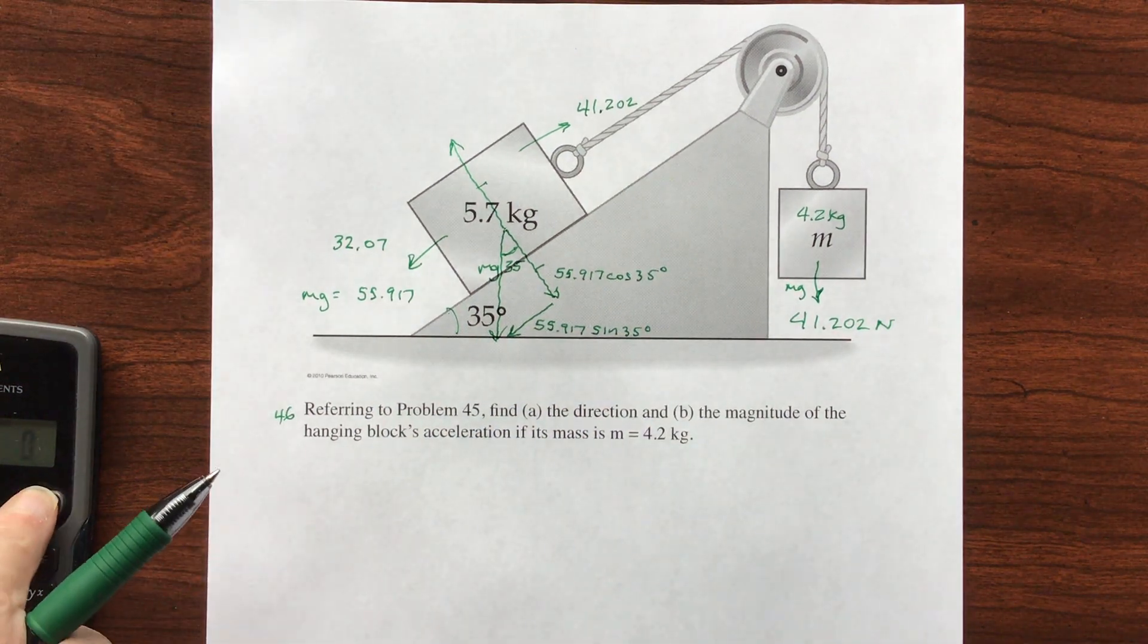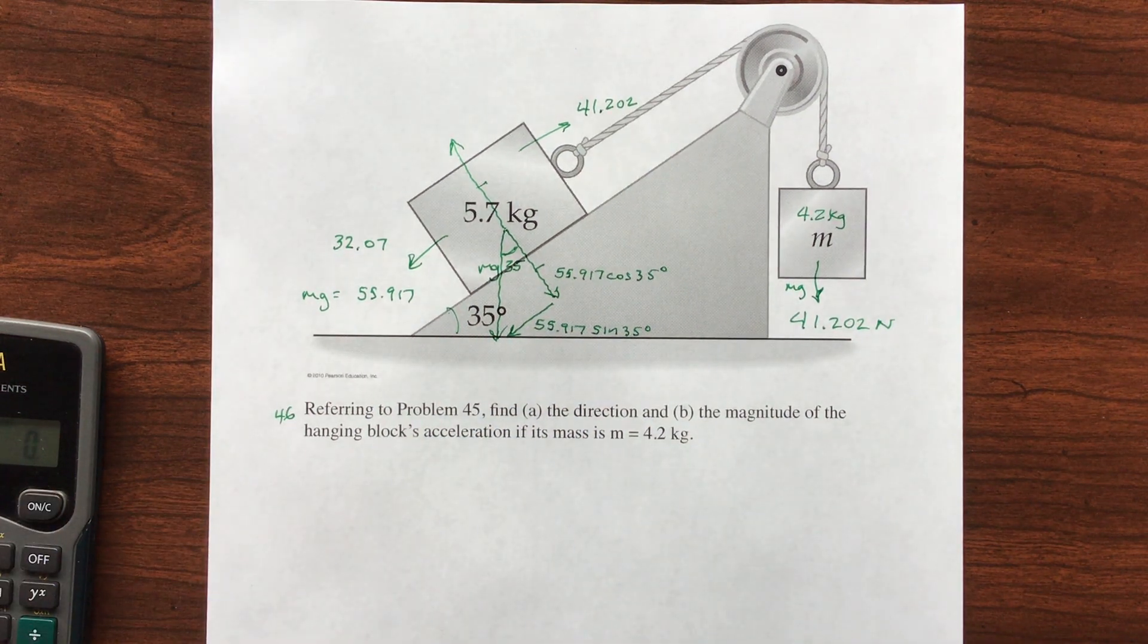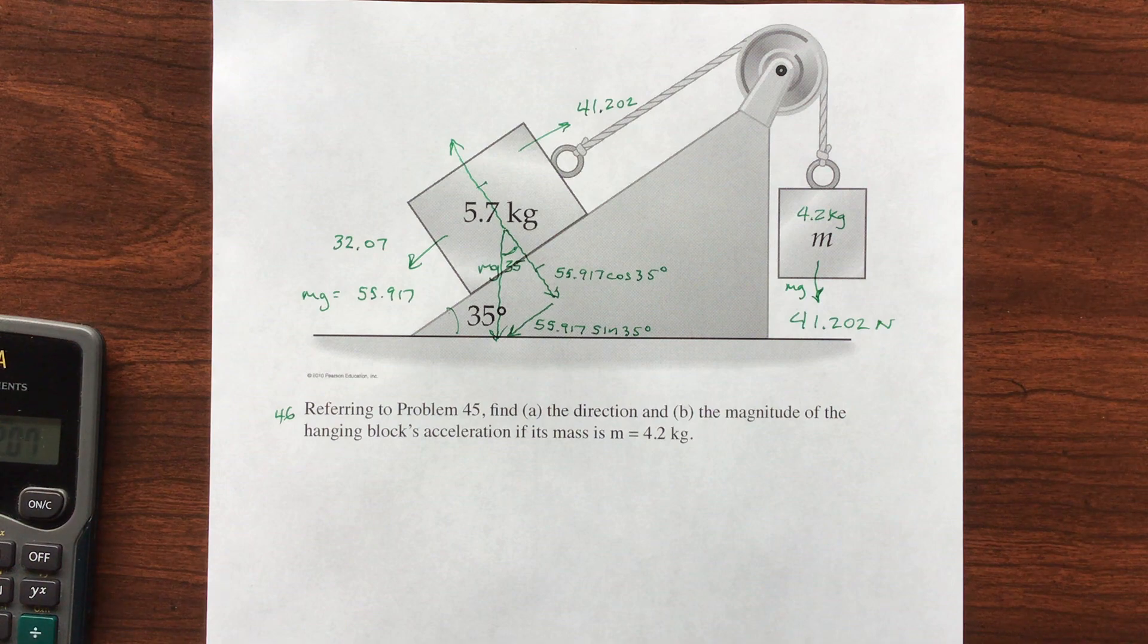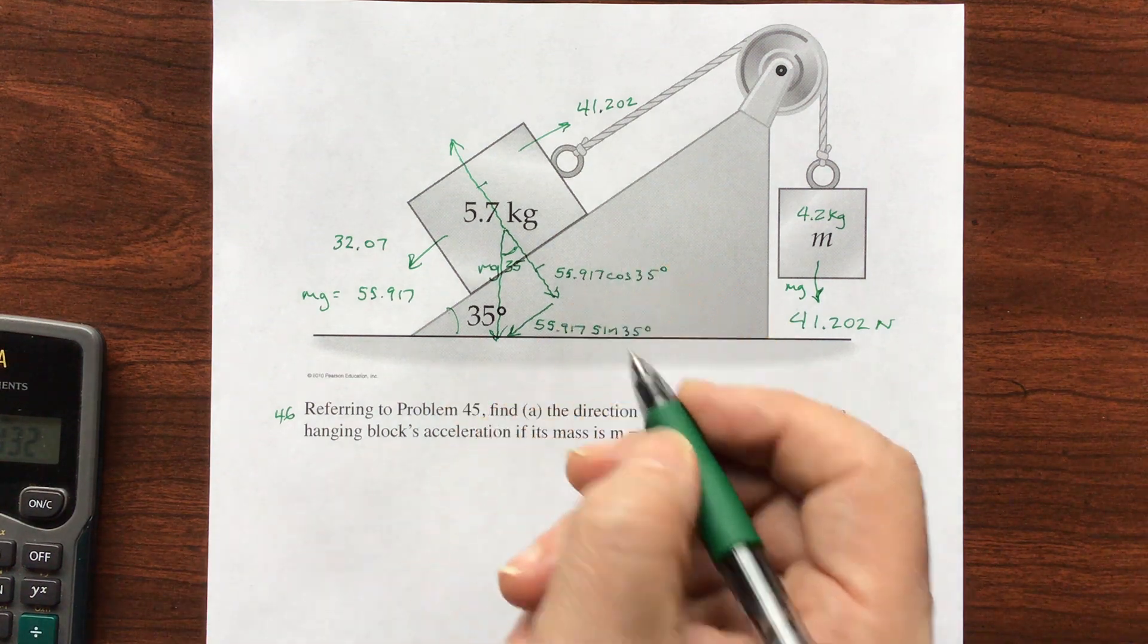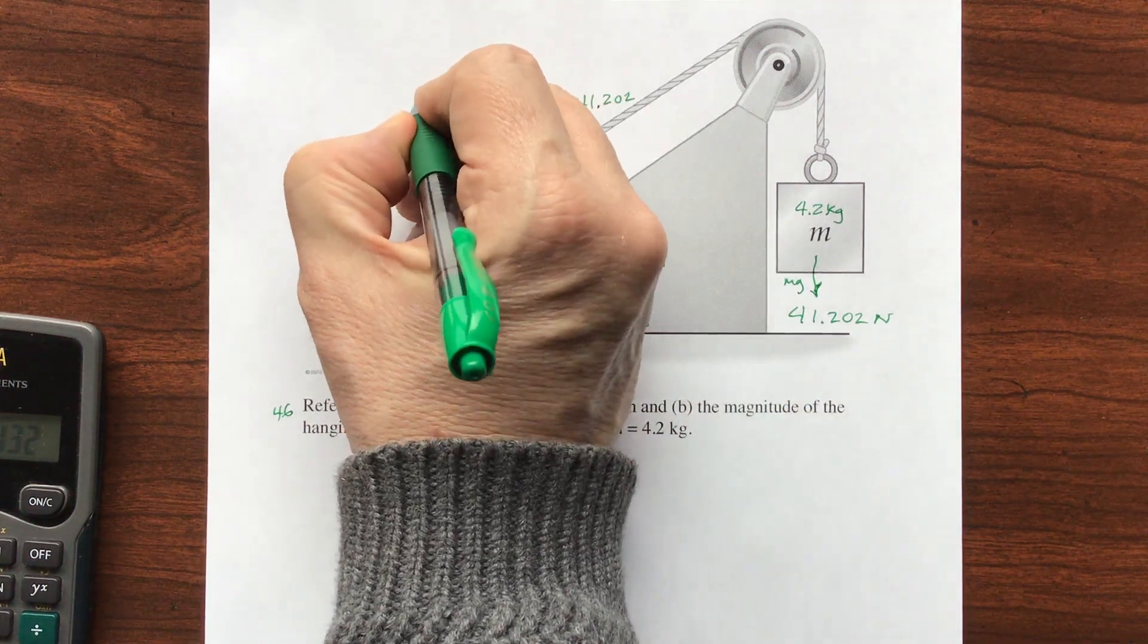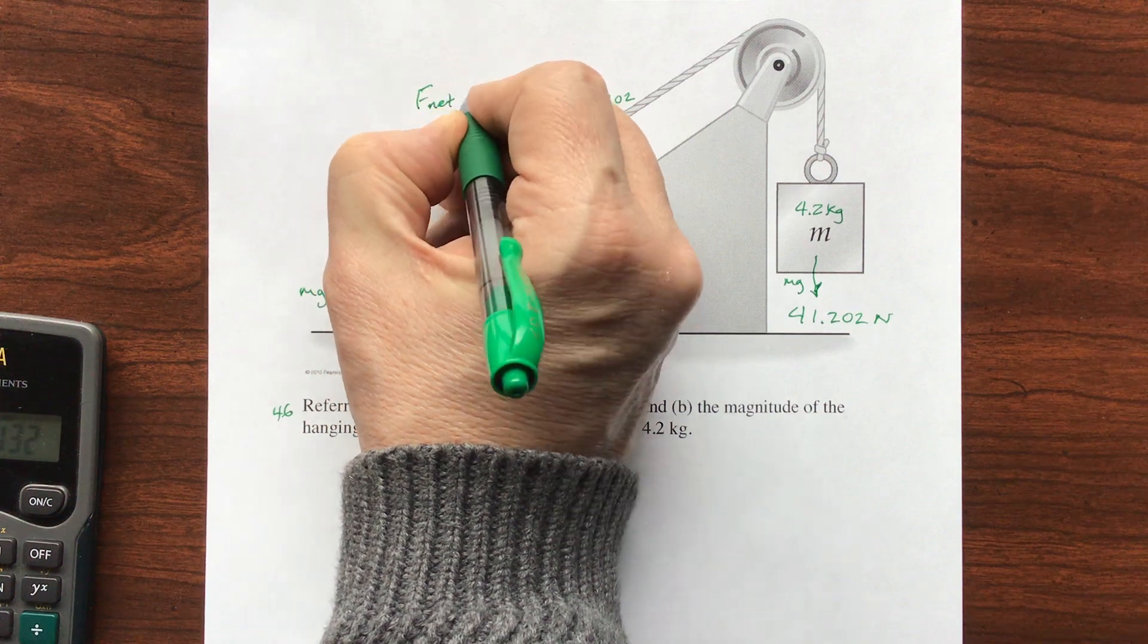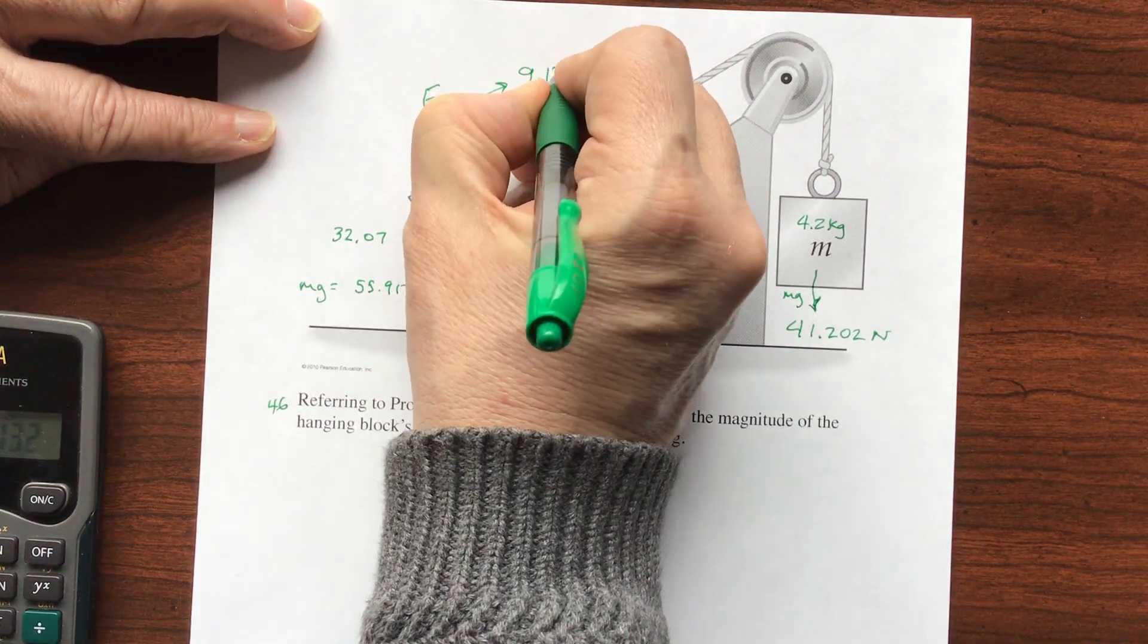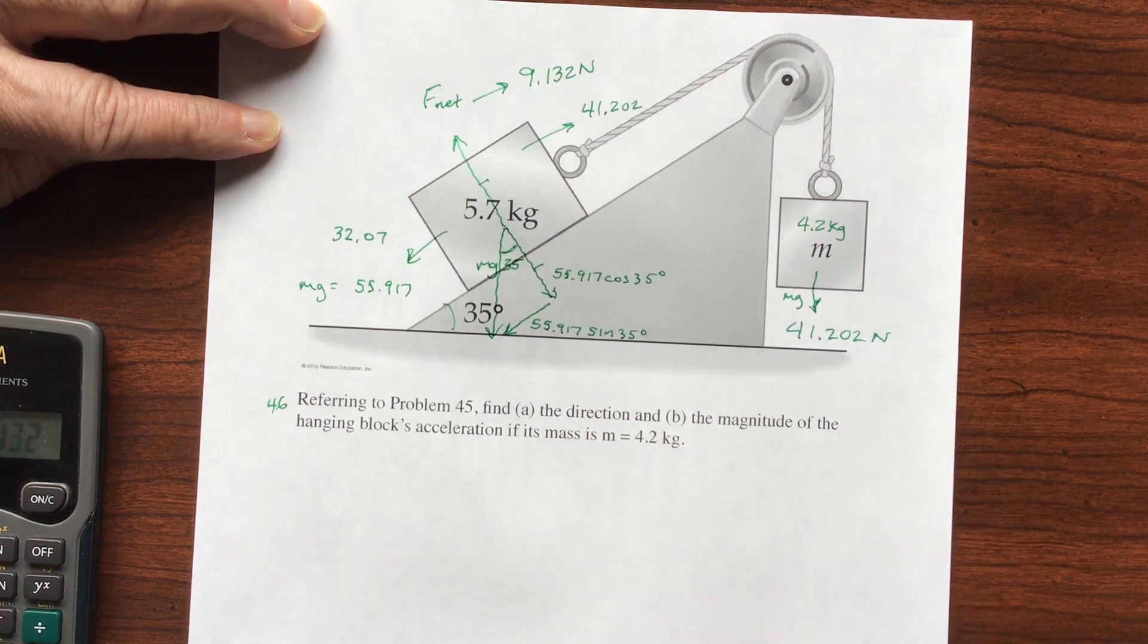I don't know what the acceleration is yet, but let's cancel it out. 41.202 minus 32.07. That means that I have a net force heading uphill of 9.132 newtons.